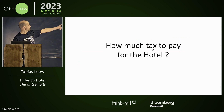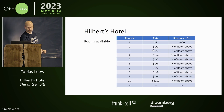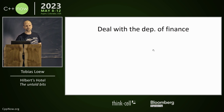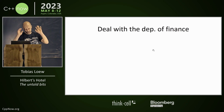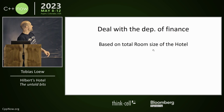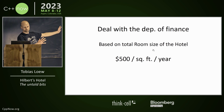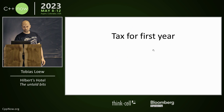But how much tax to pay for the hotel? Here is the room list, the rates, and the size in square feet. Hilbert had a deal with the Department of Finance — he wanted a flat tax based on the total room size of the hotel. They agreed to pay 500 dollars per square foot per year.